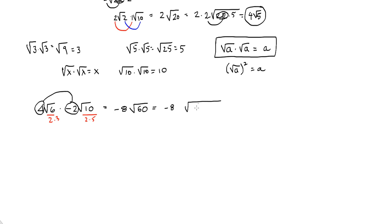Always look to make sure whether you can simplify any radicals in your answer. Radical 60 is 4 times 15 — there's a pair of 2s, so we pull a 2 outside. Negative 8 times 2 is negative 16, and what's left inside is 15. So our answer is negative 16 radical 15. Don't cross the radical sign, and make sure your answer is completely simplified.